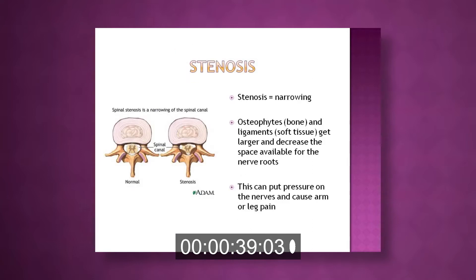The first of these diagnoses is stenosis, or narrowing. Osteophytes, which is bone, and ligaments, or soft tissue, get larger and decrease the space available for the nerve roots to pass through. This can put pressure on the nerves and cause arm and/or leg pain.